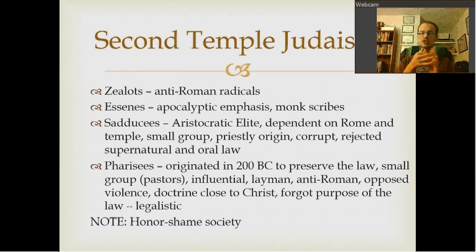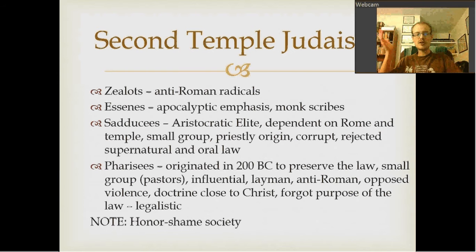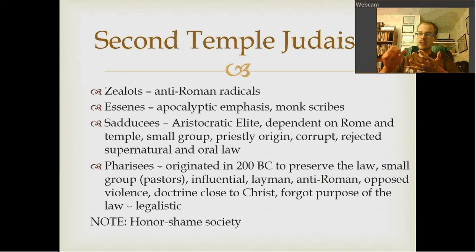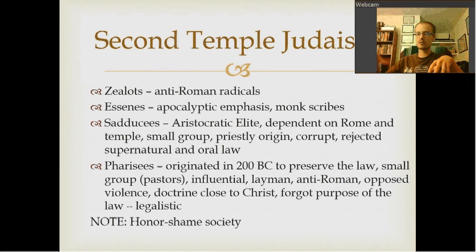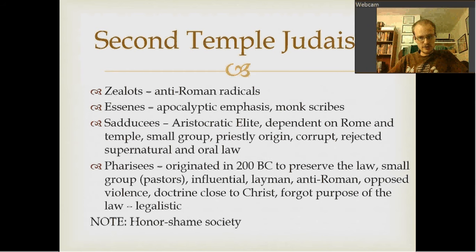The Pharisees did evolve and continue after the temple was destroyed, because they didn't need the temple to survive. They were interested in preserving the law for whatever environment they were in, knowing the temple wouldn't always be there but the law had to be. So they were there before Herod the Great rebuilt the temple and after it was destroyed, whereas the Sadducees fell apart when Jerusalem was destroyed. The Pharisees' doctrine was very close to Christ — they just forgot the purpose of the law and became legalistic.